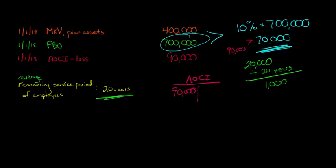So we're going to have to make an entry right now to record this $1,000. What we're going to do is to amortize this. We want to decrease this $90,000 debit balance. That means we're going to make a credit to this AOCI of $1,000. So we've got AOCI being credited for $1,000. And then what are we going to debit? We're going to debit pension expense.